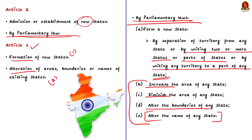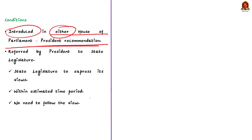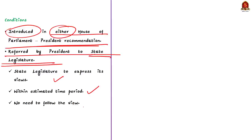Additional important points regarding Articles 2 and 3: bills for the purposes mentioned in Article 3 can be introduced in either house of Parliament on the recommendation of the President — so prior presidential recommendation is needed. Secondly, bills that affect the areas, boundaries, or names of any state should be referred by the President to the state legislature. The state legislature can express their views within such period as the President may allow, but there is no compulsion for the President to follow the views expressed by the state legislatures.